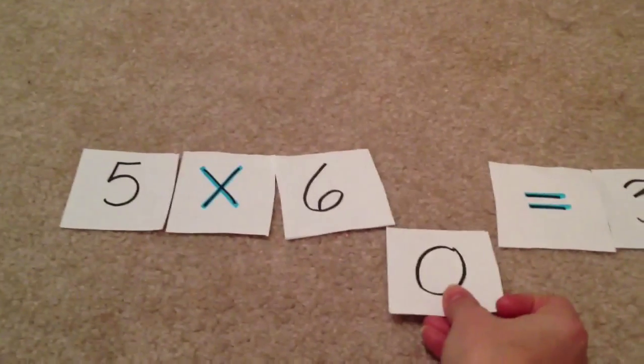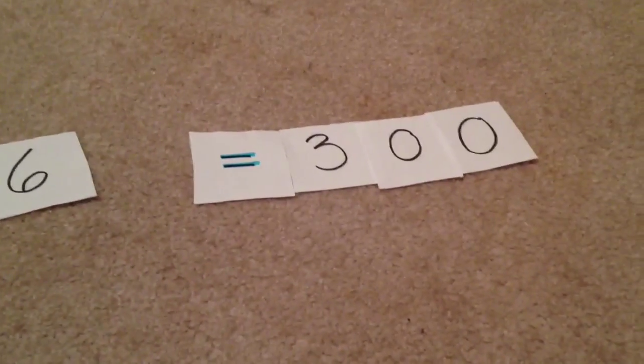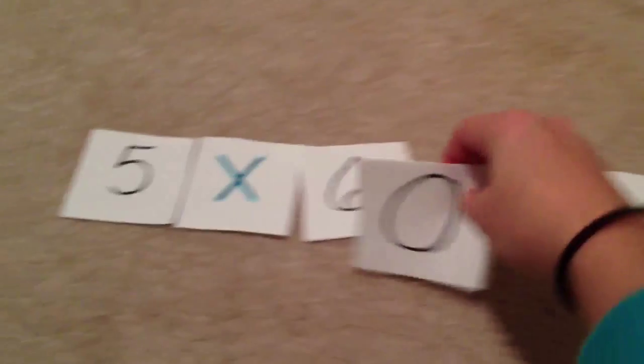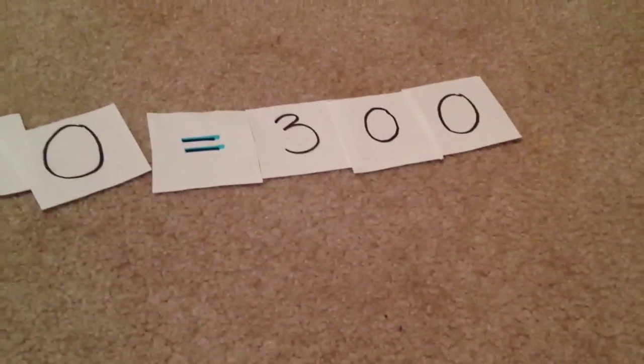Then all you do is simply take the zero that you had taken out and add it on to the end. That will give you your answer. So for 5 times 60, the answer is 300.